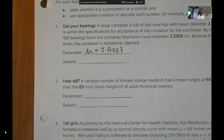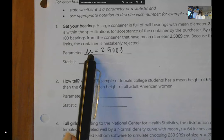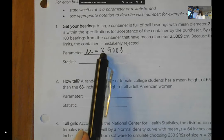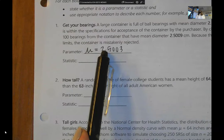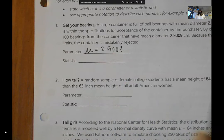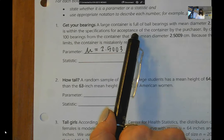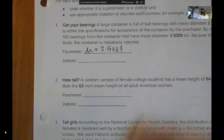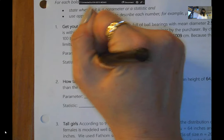These ball bearings were made to the specification that their average diameter is 2.5 centimeters. This is the population parameter. How do I know that this is the population if I don't want to go through and look at all the ball bearings? Because a machine makes them, and the machine is set to make them with a diameter of 2.5.